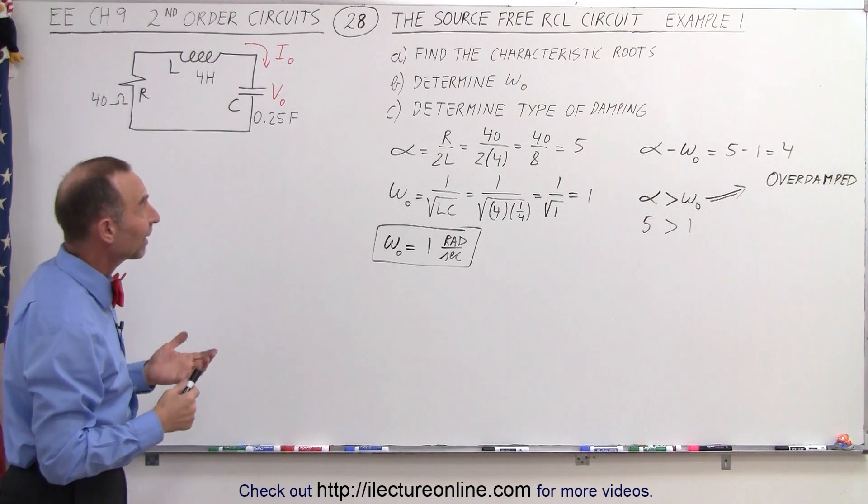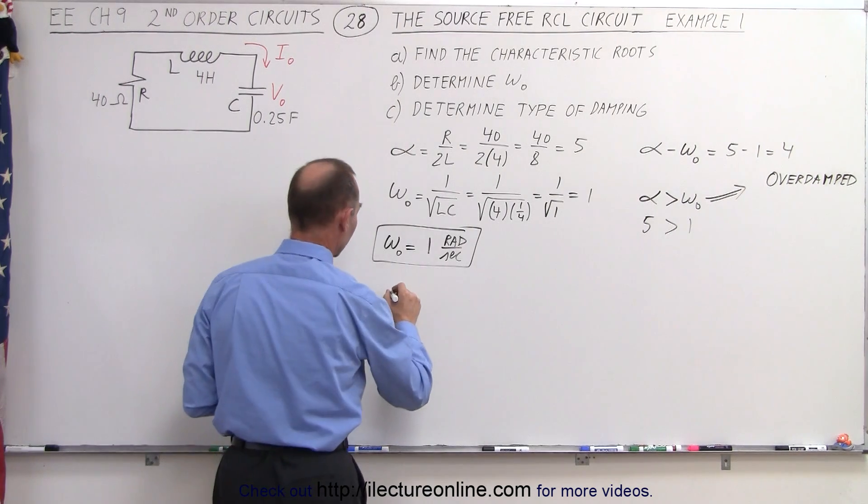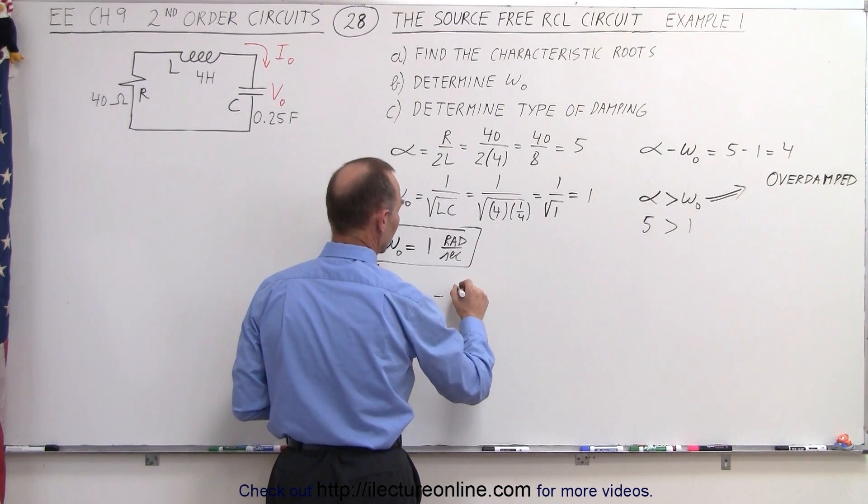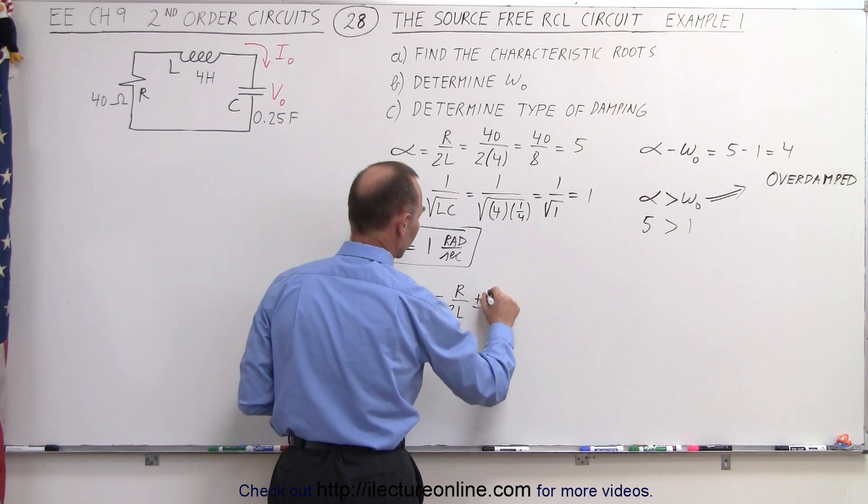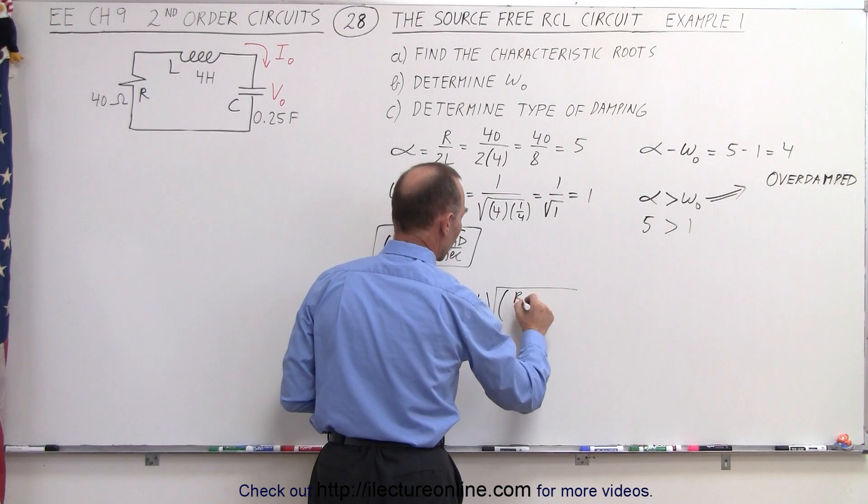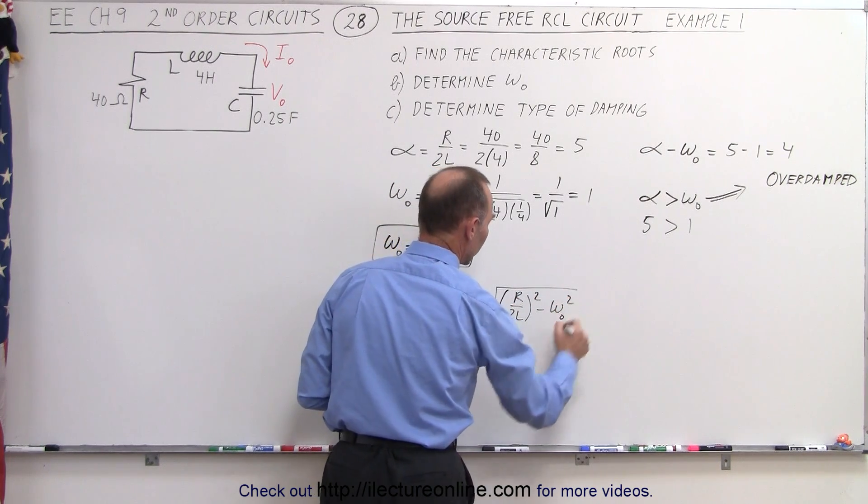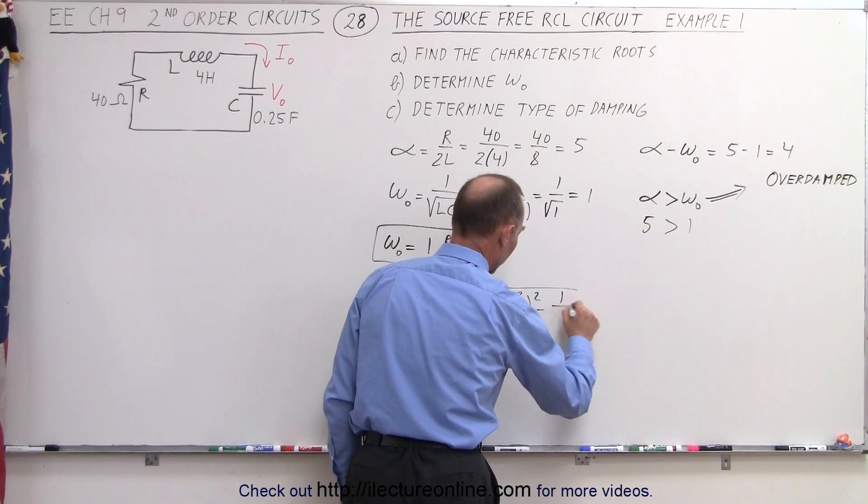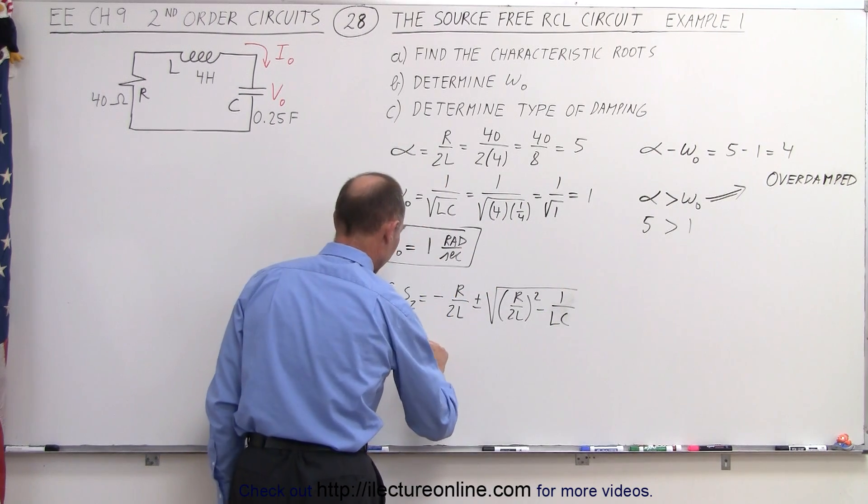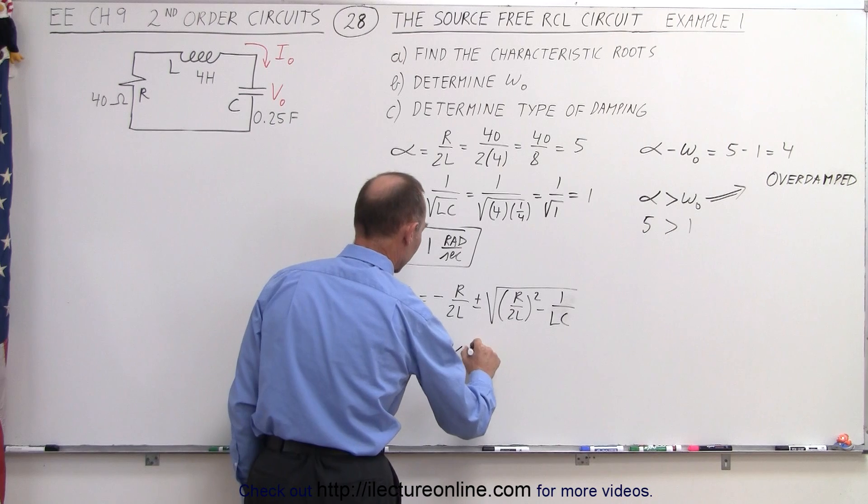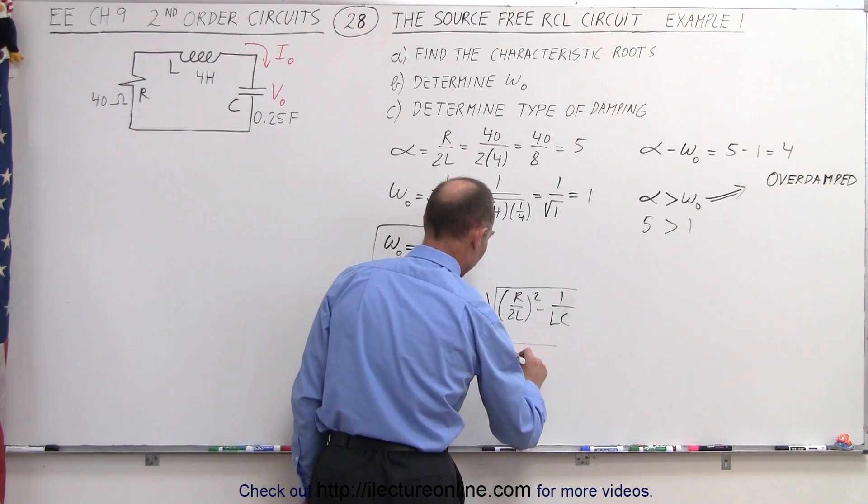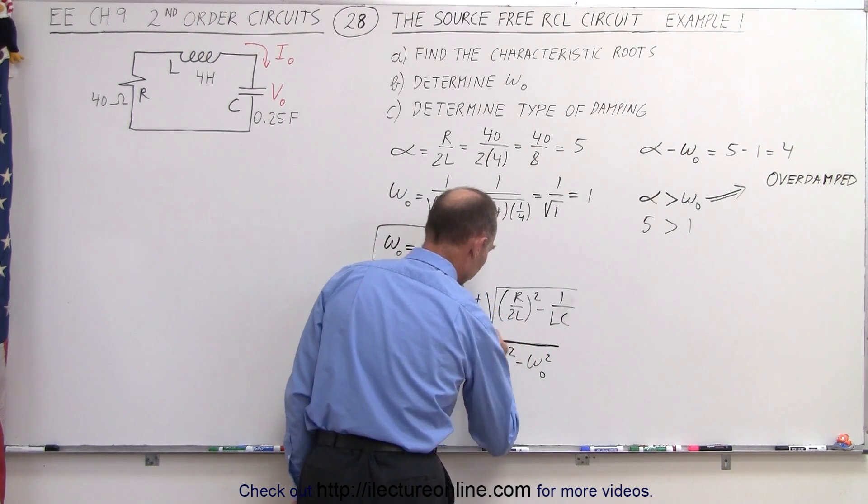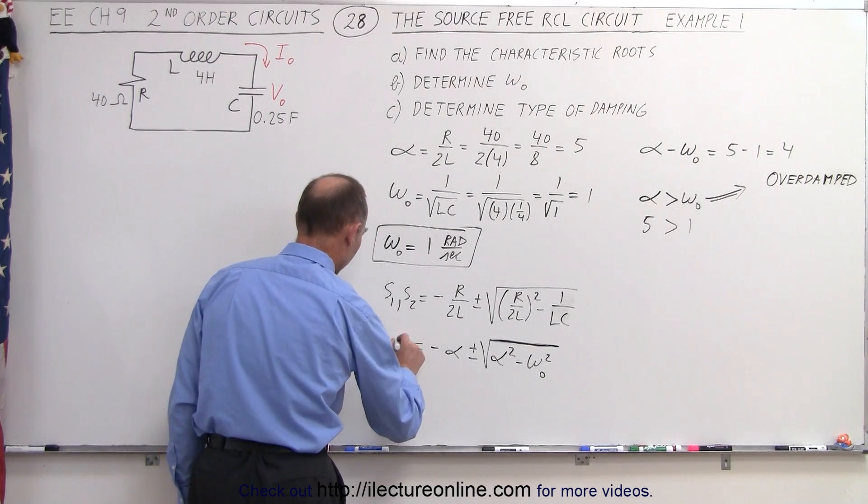Finally we need to find the characteristic roots. Now we know that the roots S1 and S2 can be found by taking minus that would be R divided by 2L plus or minus the square root of the quantity R over 2L squared minus omega sub-naught squared. Of course instead of writing omega sub-naught I could have written 1 over LC. Then we could replace that by saying this is equal to minus the damping factor plus or minus the square root of the damping factor squared minus the natural frequency squared. And this is the square root symbol right there. Those are the characteristic roots.